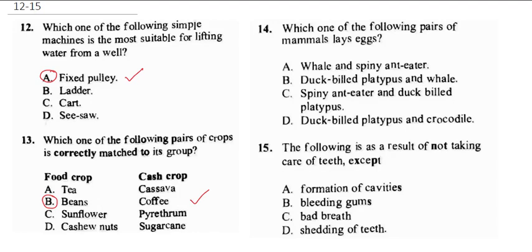Question 14 says: which one of the following pairs of mammals lay eggs? Now recall that a whale is a mammal but it does not lay eggs. Crocodile is actually a reptile, not a mammal, even though it lays eggs. So the correct answer is spiny anteater and duck-billed platypus — these are mammals that lay eggs. The correct answer is C.